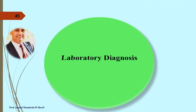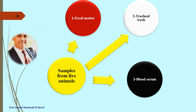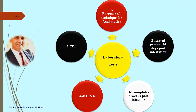Laboratory diagnosis — samples from live animals: (1) fecal matter, (2) tracheal wash, (3) blood serum. Methods include: (1) Baermann's technique for fecal matter to detect larvae, (2) Verman's technique at 24 days post-infestation, (3) eosinophilia detected three weeks post-infestation, (4) ELISA test, and (5) complement fixation test.